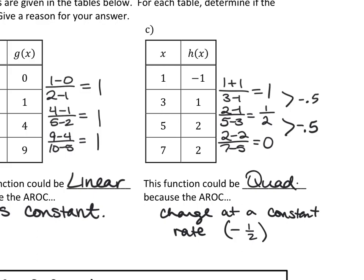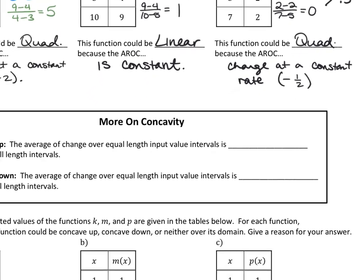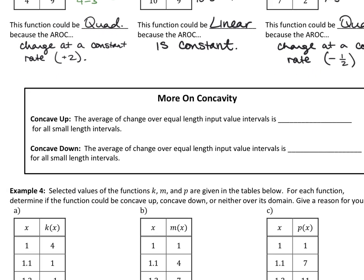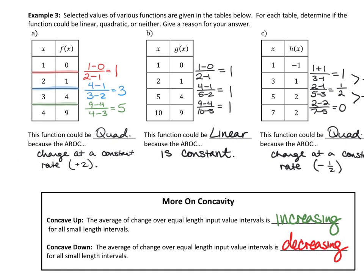Finding these average rates of change also tells us about concavity — those concave up and concave down intervals. Not only can we decide if it's quadratic, linear, or neither, we can also decide if it's concave up or concave down. For concave up, the average rate of change over equal-length input value intervals is increasing. For the first table, since the average rate of change changes by plus 2, it's increasing — so that one is concave up.